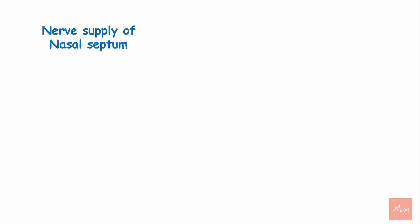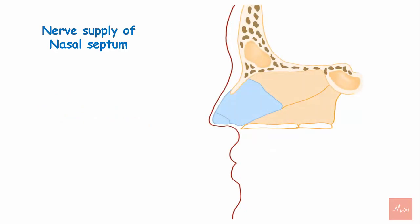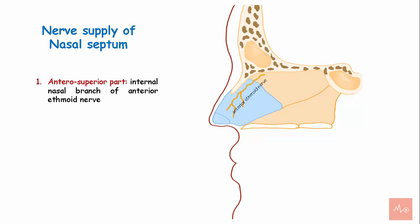Nerve supply of the nasal septum. The nasal septum is supplied by sensory nerves from the trigeminal nerve. The anterosuperior part is supplied by the internal nasal branch of the anterior ethmoidal nerve. The anteroinferior part is supplied by the anterior superior alveolar nerve.